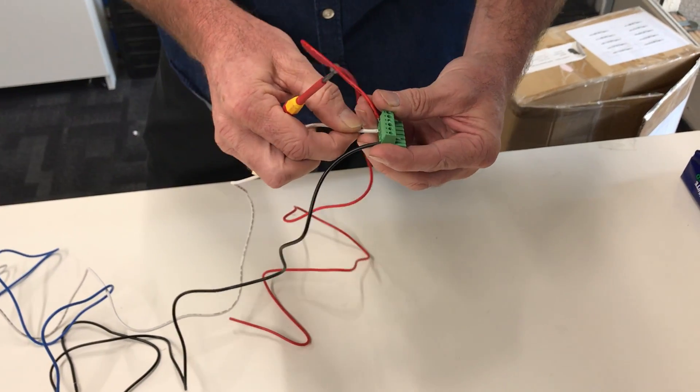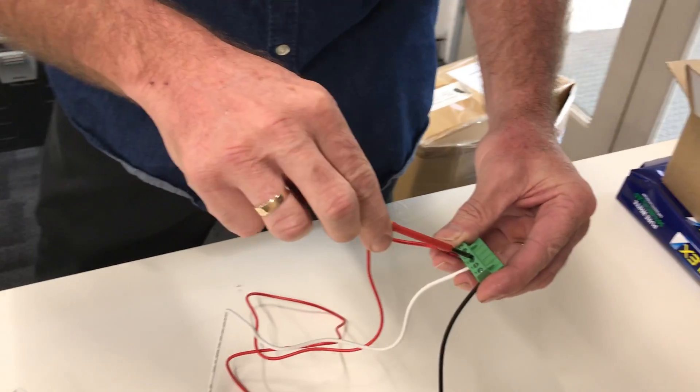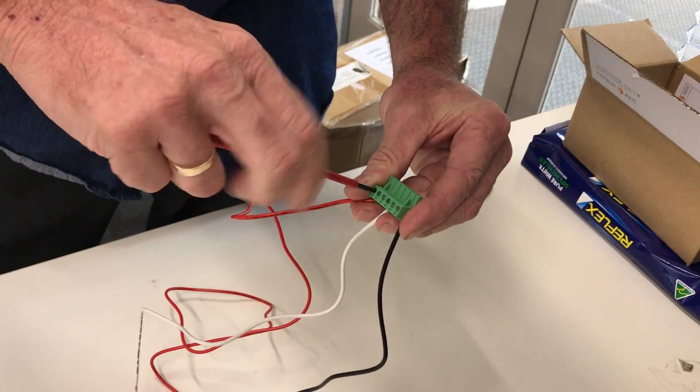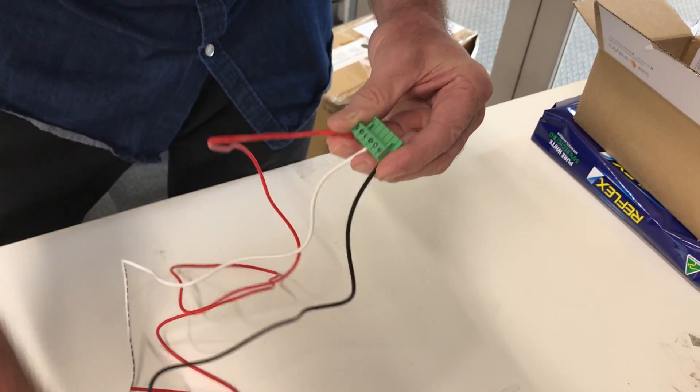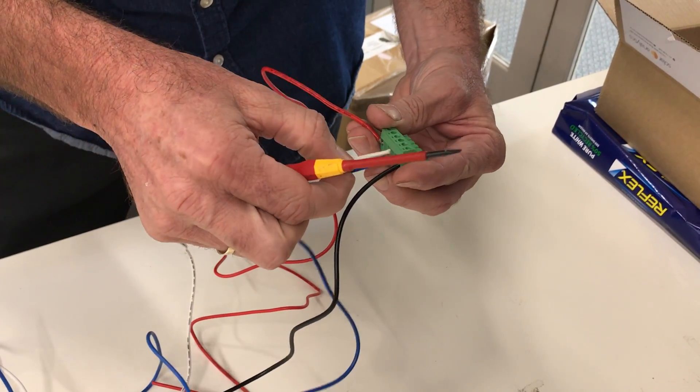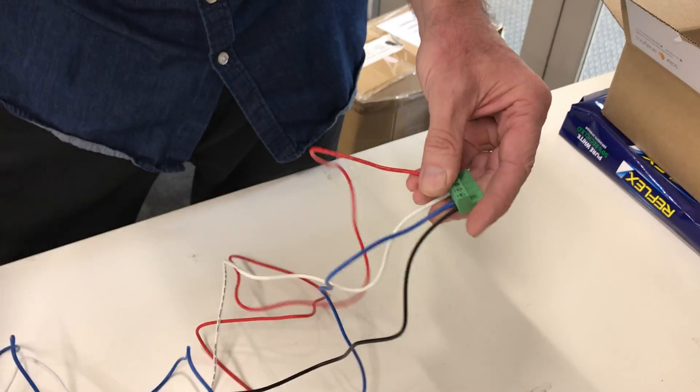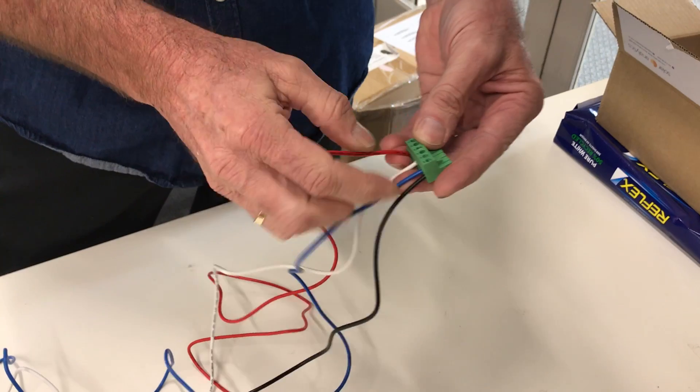We take a white cable, put it into the middle, do it up, tighten up our red phase, and then we take a blue wire, we insert that into the last terminal, we do that up, and there you have it, three phases.